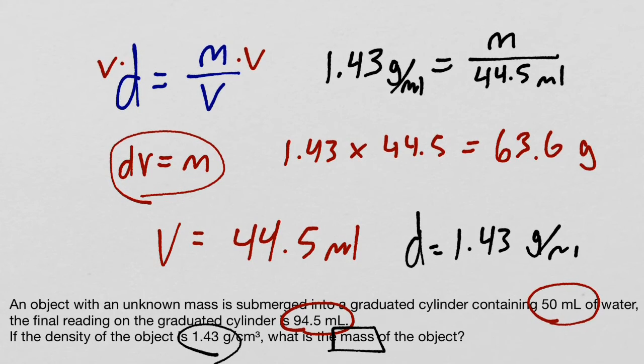In the next video we're going to talk about Avogadro's number, 6.022 times 10 to the 23, or otherwise known as the mole.